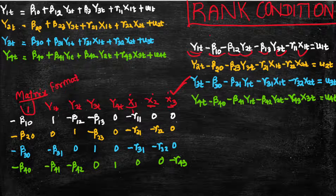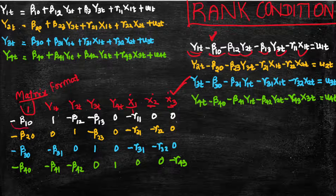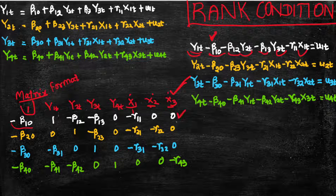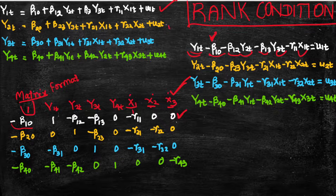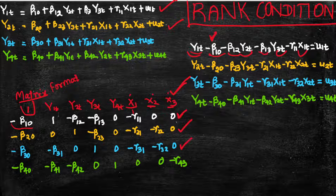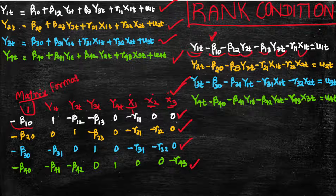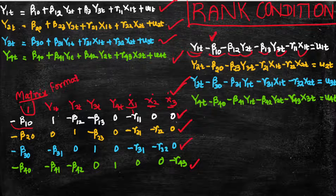We are keeping the intercept term here — beta 10, negative beta 10 — for the first equation. I have highlighted the coefficients in respective colors: white color coefficients are for the first equation, yellow color for the second equation, blue color for the third, and green for the fourth equation.